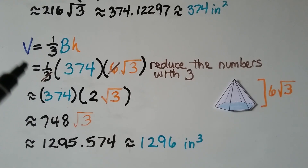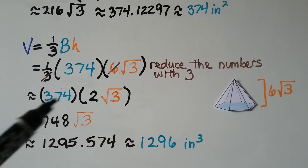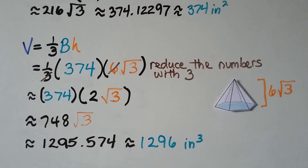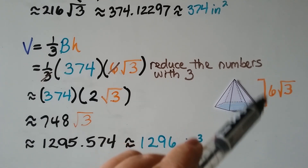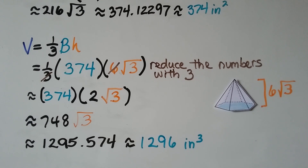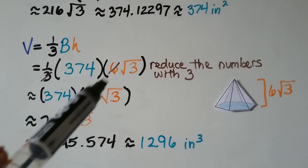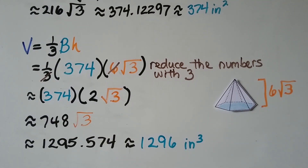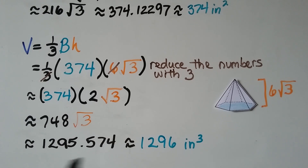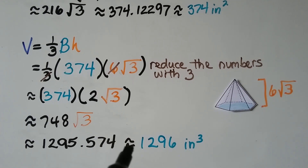Now we use the pyramid volume formula: one-third times base times height. The base is approximately 374, and the height equals the apothem, which is 6√3. We cancel the 3 in one-third with the 6 in the apothem, leaving 374 times 2√3. Multiplying 2 times 374 gives 748√3, which on a calculator is approximately 1,295.574, rounded to approximately 1,296 cubic inches for the volume of the regular hexagonal pyramid.